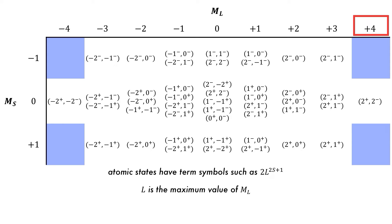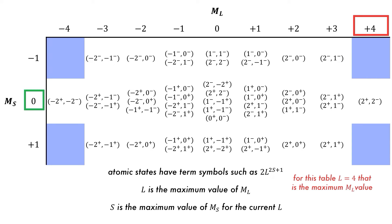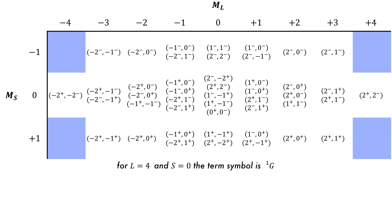The maximum value for ML here is 4, as there is only one microstate with an MS value of 0. For this atomic state, the only possible MS value is 0. Using the table shown earlier, we find that the term symbol for this atomic state is singlet G, because if S equals 0 then 2S+1 equals 1, and G is the letter used when L equals 4.